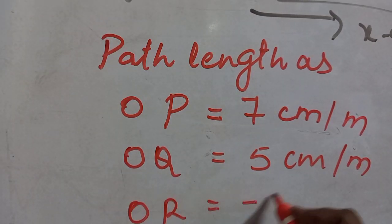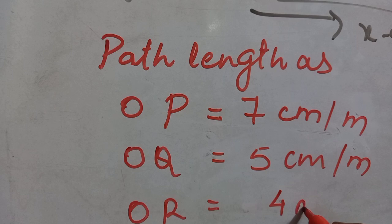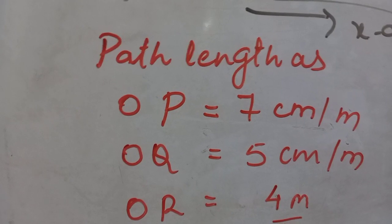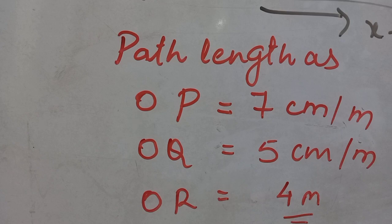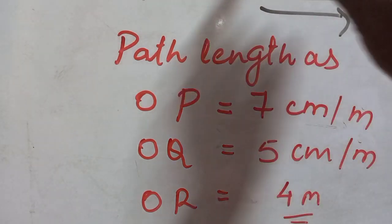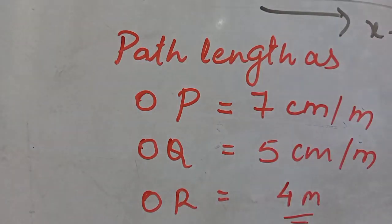Path length OR is 4 meters — note that in path length we do not take the minus sign; we consider only the magnitude, since it is a distance. Therefore it is a scalar quantity. Now if the body moves from O to P and again from P to Q, the total path length is calculated.